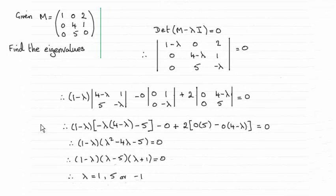Hi there, now for this part we're given the matrix M and asked to find the eigenvalues for it, showing that one of those eigenvalues is 1. The other two turned out to be 5 and minus 1.